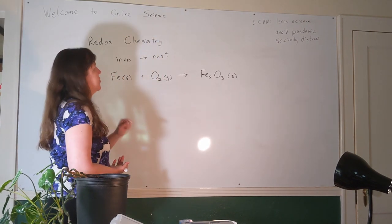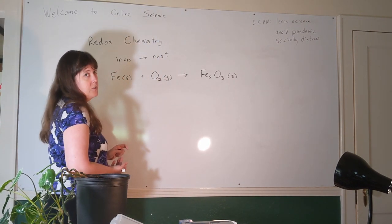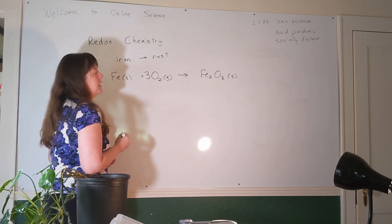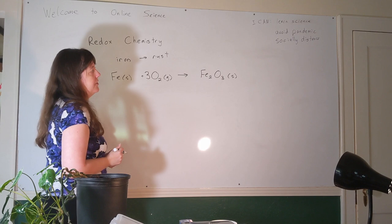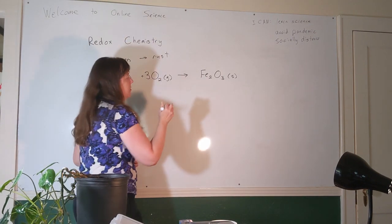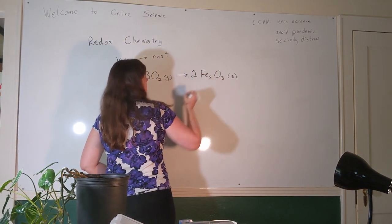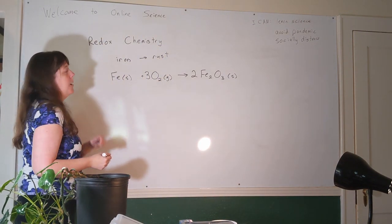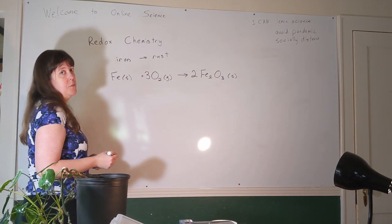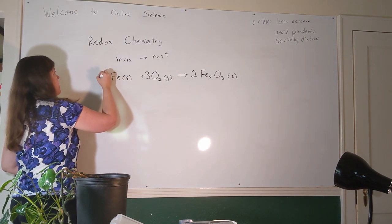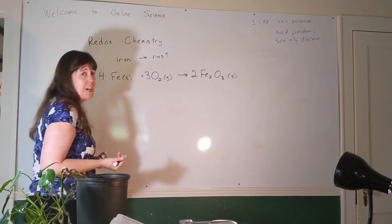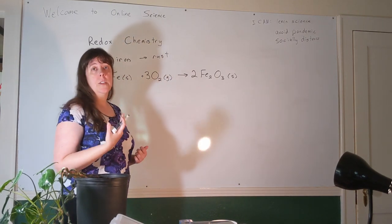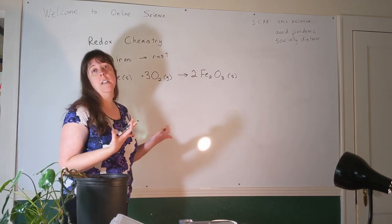If we need six oxygens on the left and they come in pairs, we need three O₂s. On the right-hand side, if we need six oxygens and they come in threes, we'll need two Fe₂O₃s. The last thing to fix is the iron — we'll need four iron atoms. Balancing reactions isn't the main focus here, but it's a skill we got early on in this course and we need to never lose.